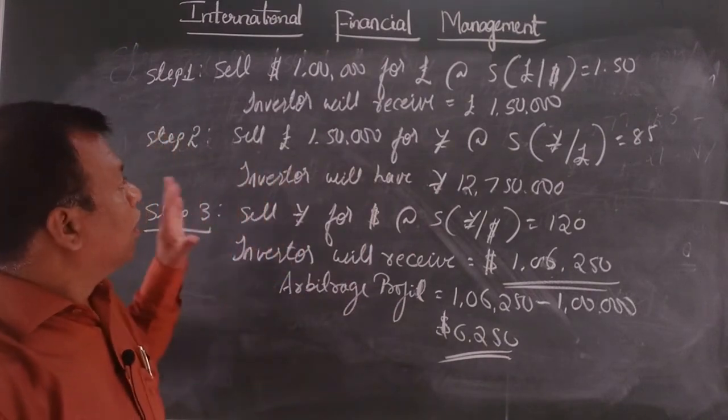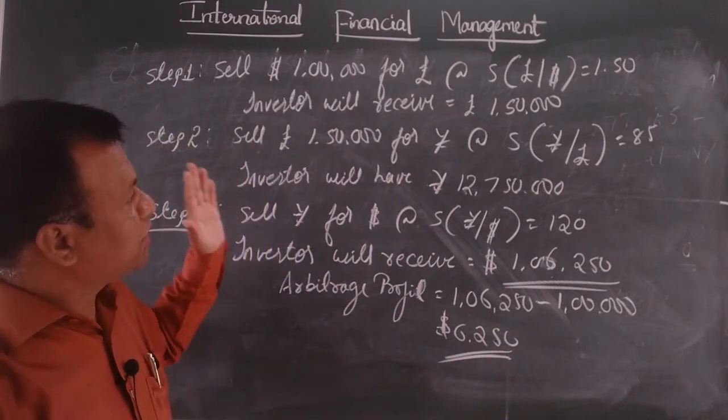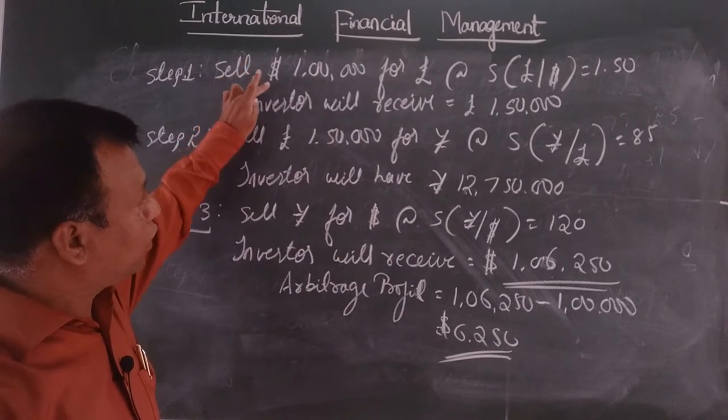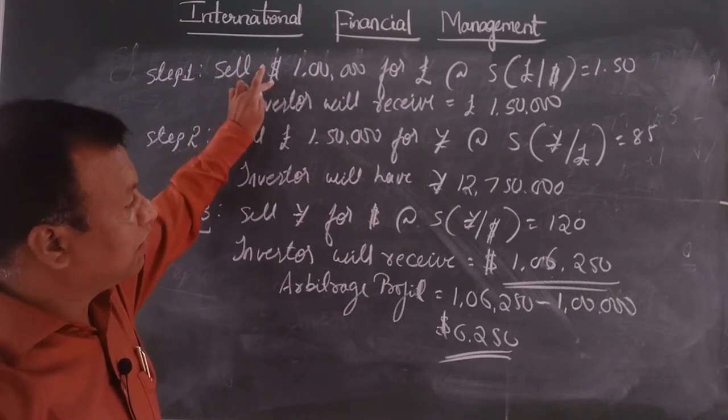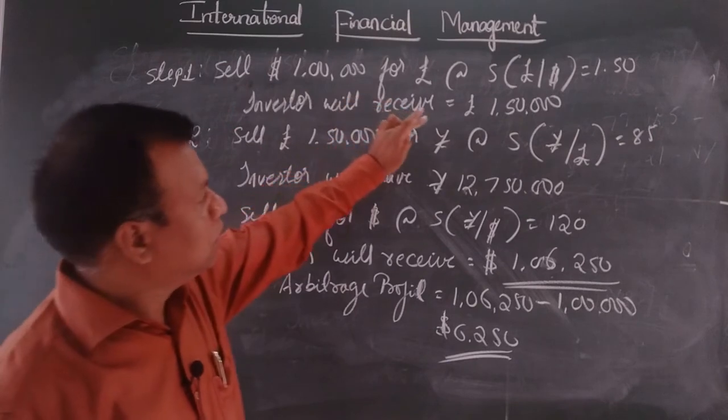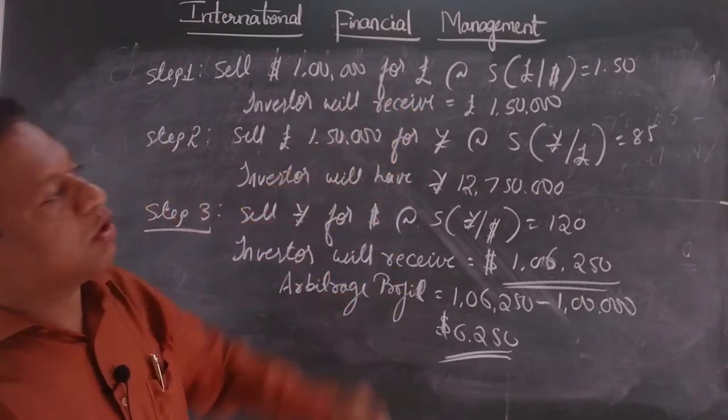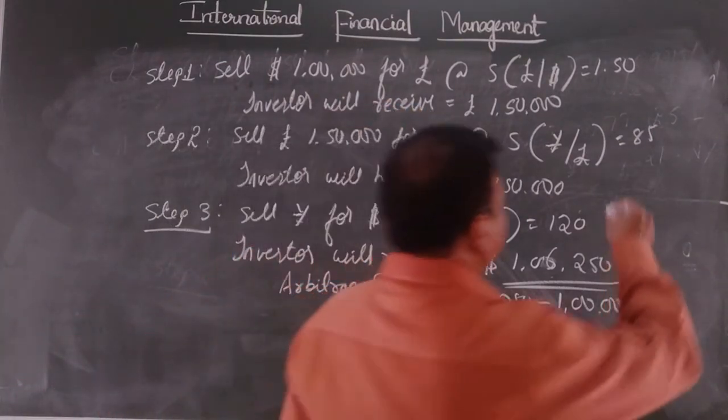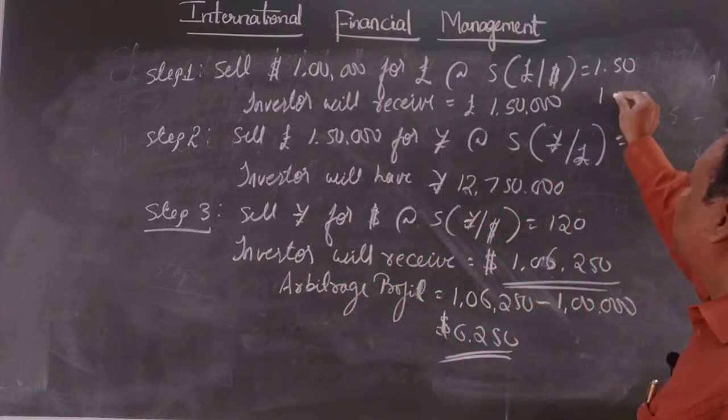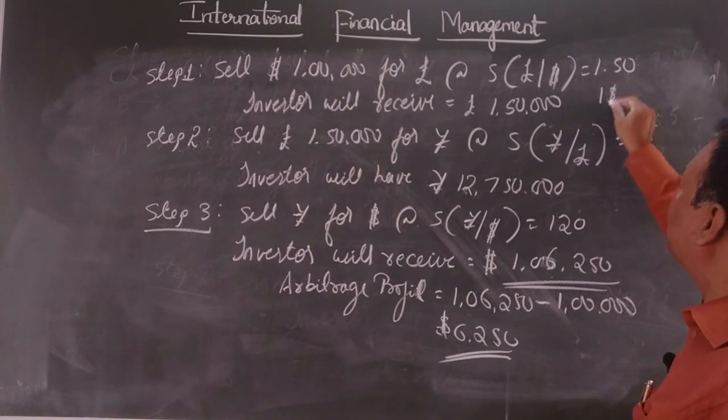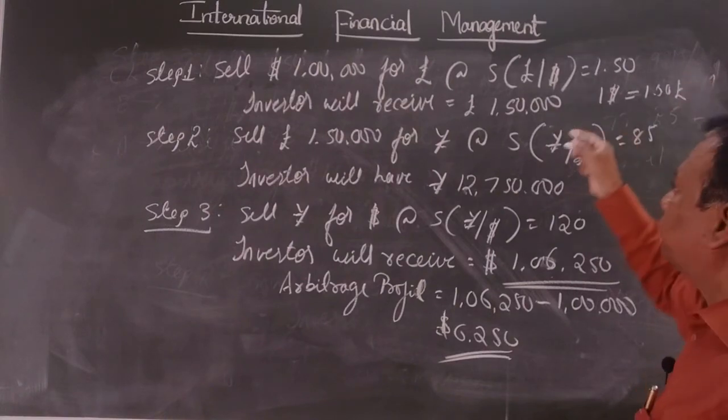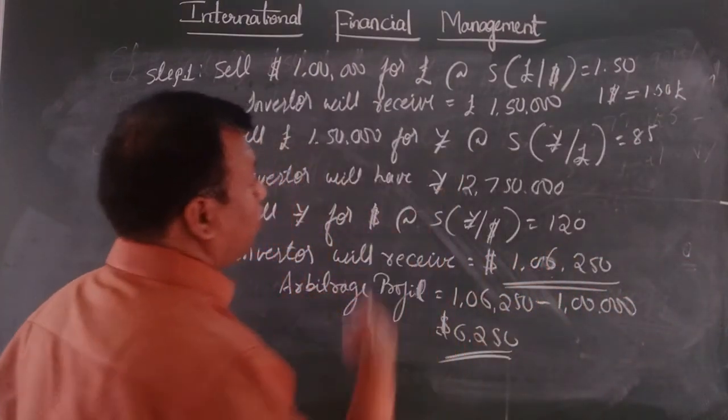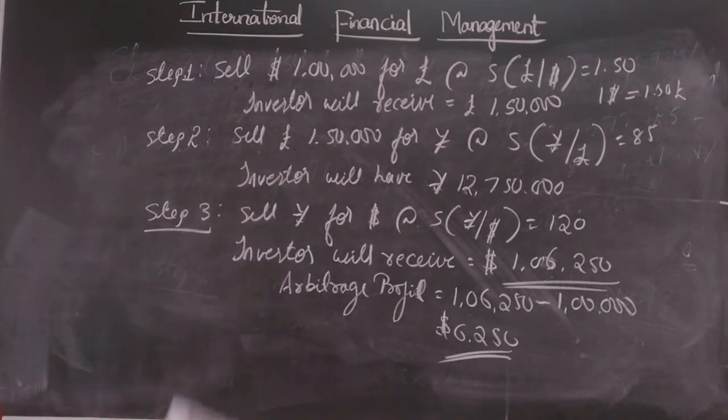So to conclude, investor what they are doing? Investor is going to sell first currency that is dollar. They are given dollar, dollar 1 lakh investor is having. So dollar is converting into pound. So when they convert dollar into pound, how is he going to convert? Basically you should know how to convert also. So here what they are, 1 dollar is equal to 1.50 pound. So therefore for this 1 lakh dollar, how much we will have? So we will have 1 lakh 50,000 pound.